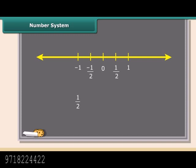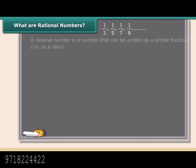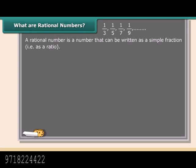Students, what about 1 by 2 — is it a whole number, natural number, or an integer? You can see 1 by 2 lies between 0 and 1. We call it a rational number. A rational number is a number that can be written as a simple fraction, that is, as a ratio. So a rational number looks like p upon q. Remember, q cannot be equal to 0.